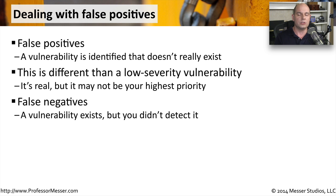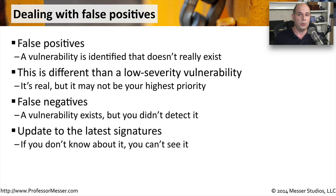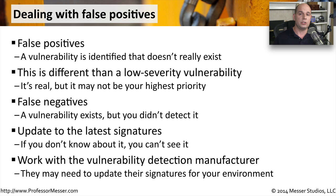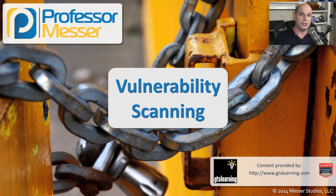The goal with both false positives and false negatives is to make sure you update to the latest signatures. These scanners can only scan for what they know about, and the signature update is a critical part of ensuring you're able to see as much as possible on those devices. You may also need to talk to the manufacturer of your vulnerability scanner and let them know what you're seeing — they may be able to create a signature to solve the false positive or false negative issue in your environment, and at the same time help everybody else with a similar configuration.